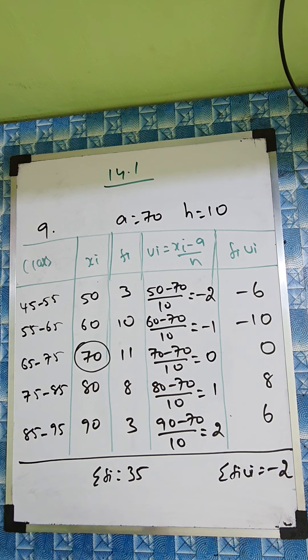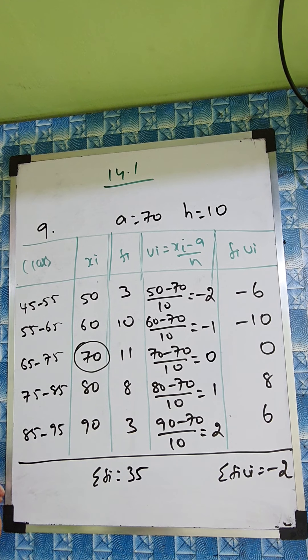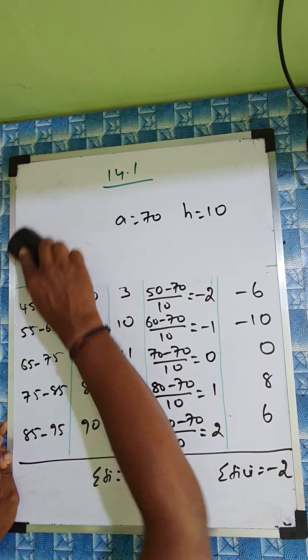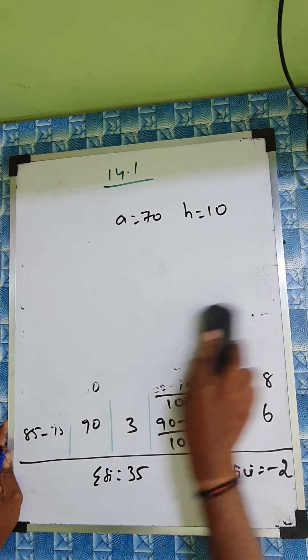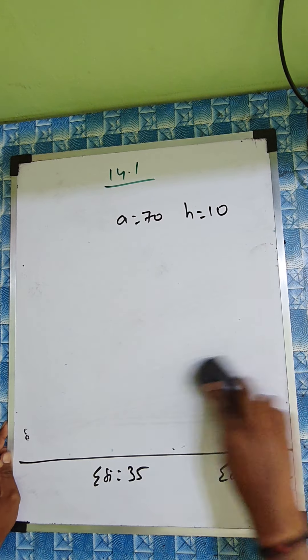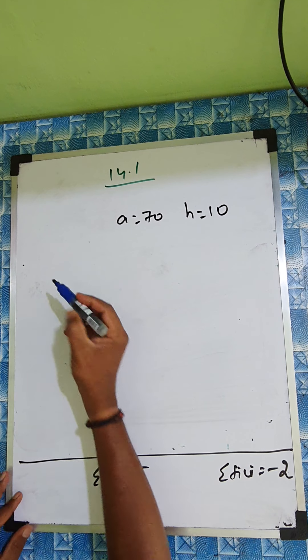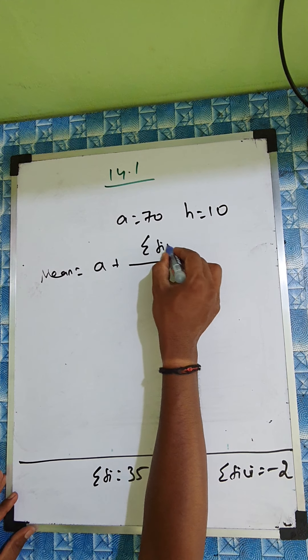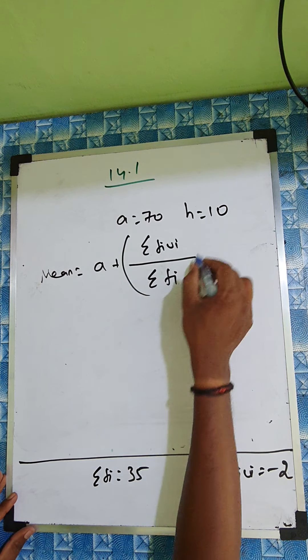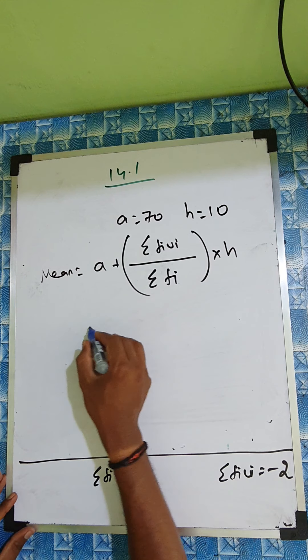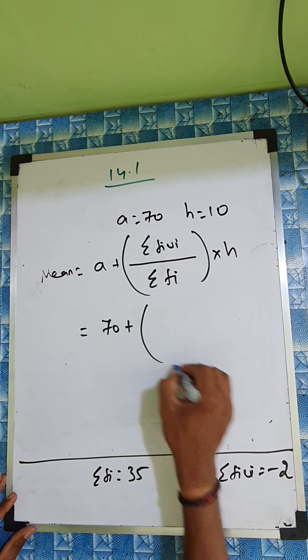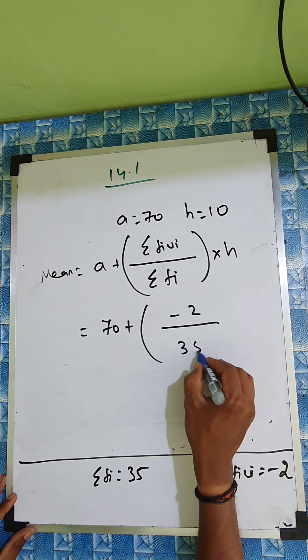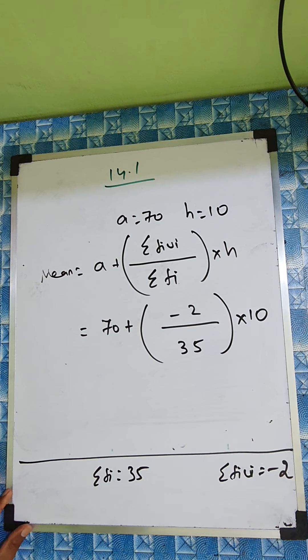So now we'll apply the formula and you can get the answer. Find the mean literacy rate. So we'll use the formula now. Step deviation formula: mean equal to a plus sigma fi ui by sigma fi into h. So a is 70, and sigma fi ui we got minus 2, by sigma fi is 35, into h is 10.